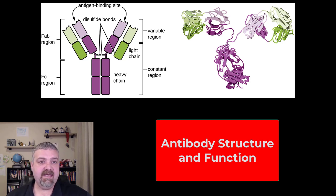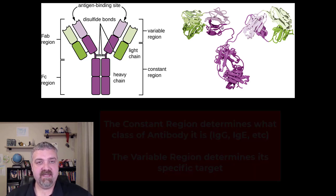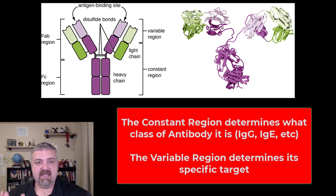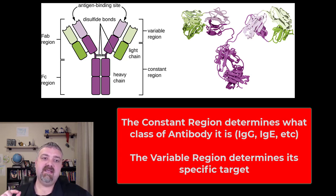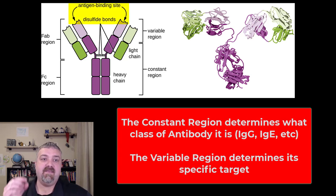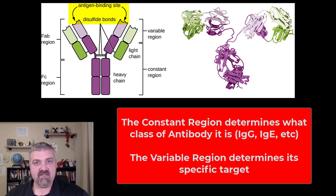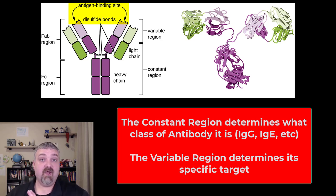So here you see an antibody. This would be a single antibody like you'd see with an IgG or something. The key thing to note here is that there are antigen binding sites — antibodies' jobs are to find antigens. And then we'll talk about the functions in just a moment.